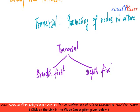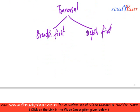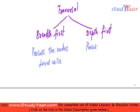In breadth-first traversal, we simply process all nodes at a particular level — we process the nodes level by level. In depth-first traversal, we process the descendants first, going all the way down to the last descendant, to the full depth of the tree.